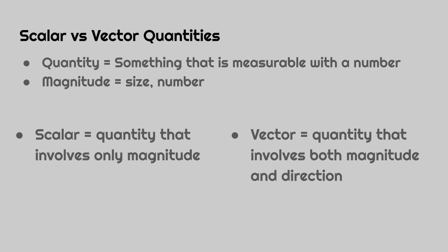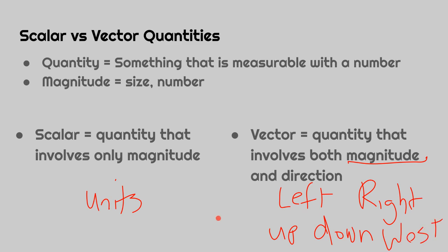Scalar versus vector quantities. Scalar: a number or magnitude is the size or the number. Scalar quantities involve only magnitude, only numbers. You can have units on the end of that. Vector quantities have magnitude and direction: left, right, up, down, west. Even negative numbers, negative and positive, can be used for our direction.